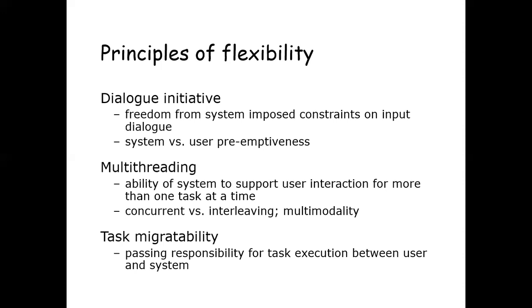Next is task migrability, which concerns the transfer of control for execution of tasks between system and user. It should be possible for the user or system to pass control of a task to the other, or promote the task from a completely internalized one to a shared and cooperative venture. A task internal to one can become internal to the other or shared between the two partners. Spell checking a paper is a good example of the need for task migrability.